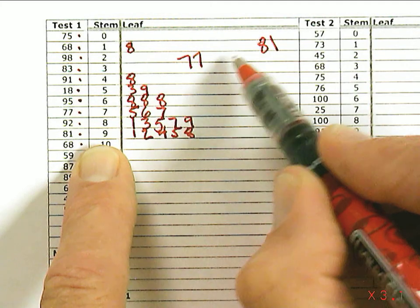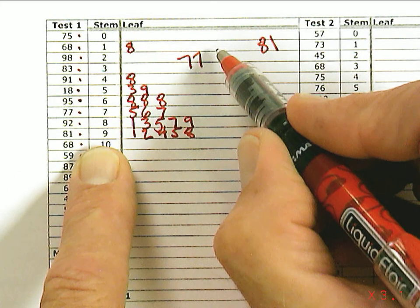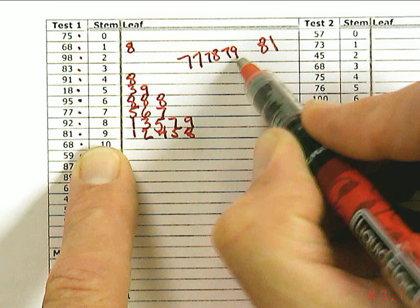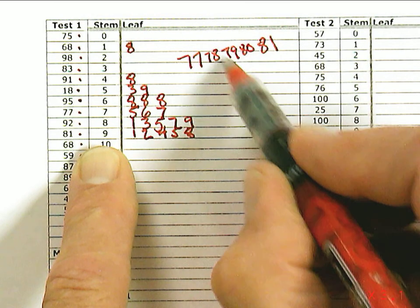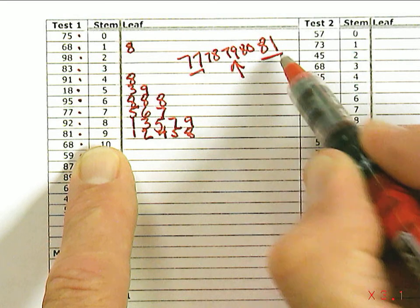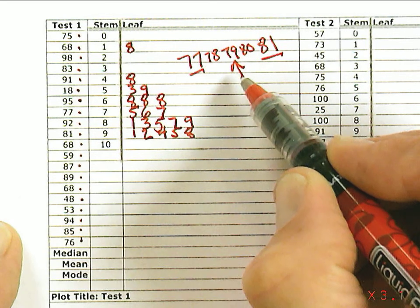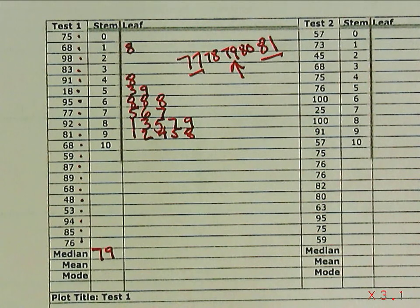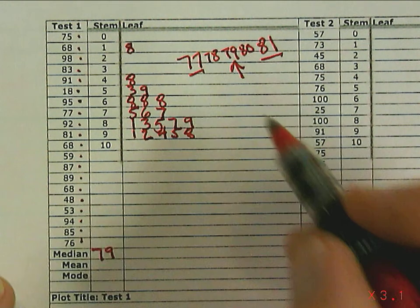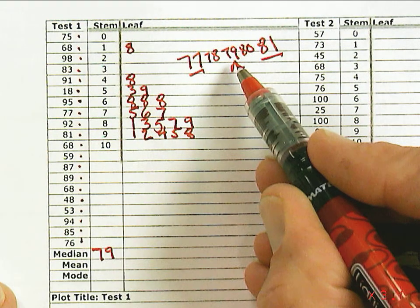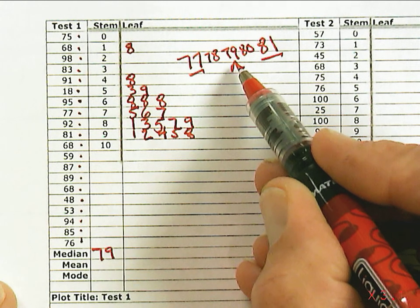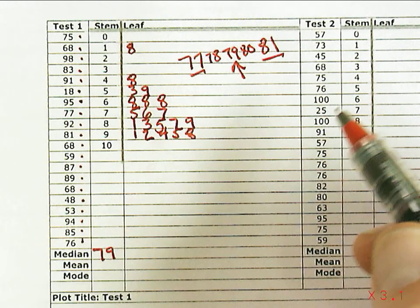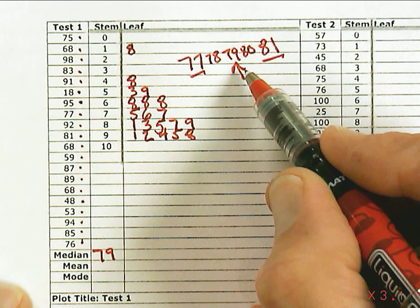My median is halfway between 77 and 81. If I think about the numbers I skipped: 77, 78, 79, 80. The middle between 77 and 81 is the number 79. So 79 is the median or middle value. There's no 79 in the data set, but what we're looking for is where the middle number would be if we had all the numbers in the set, and it would be at 79.